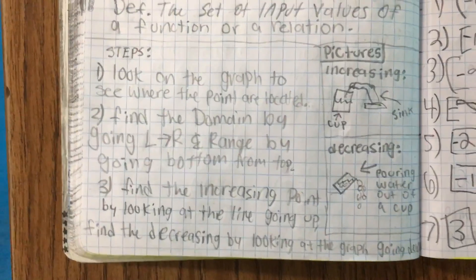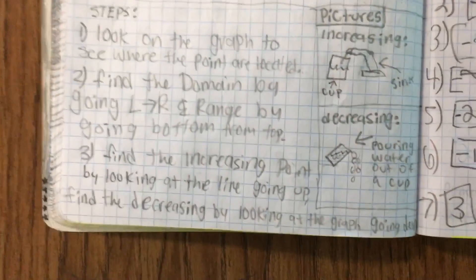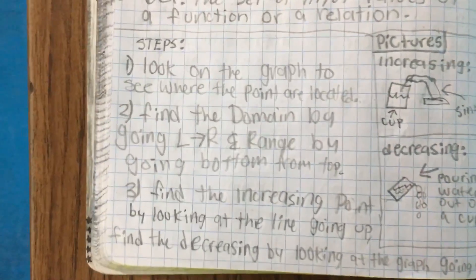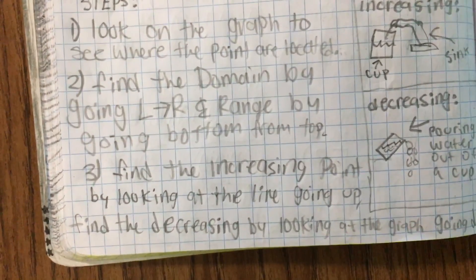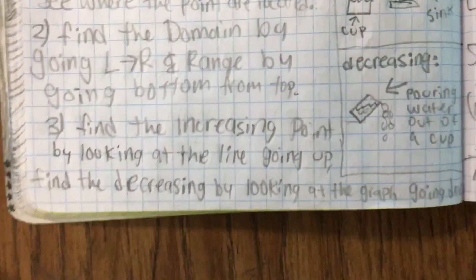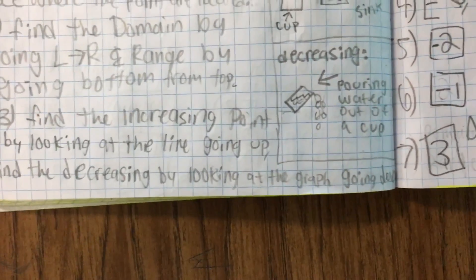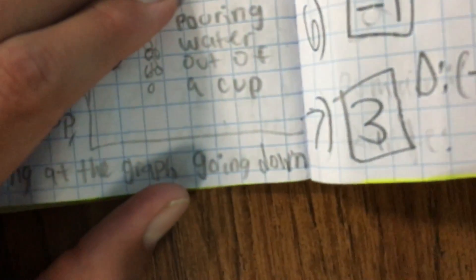Find the domain by going left to right, and range by going bottom to the top. Find the increasing point by looking at the line going up, find the decreasing by looking at the graph going down.